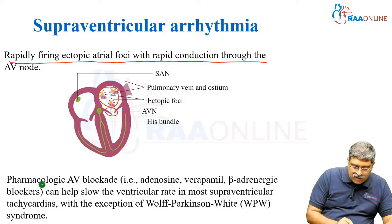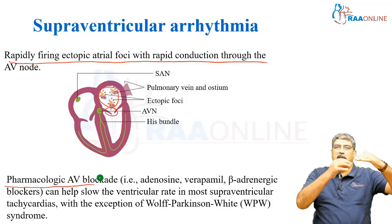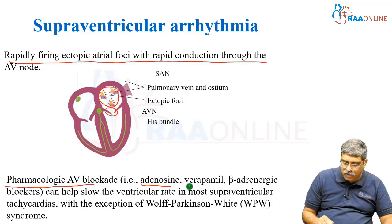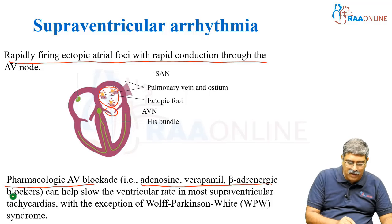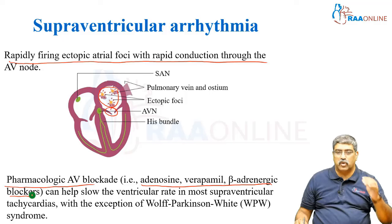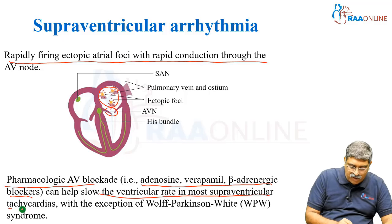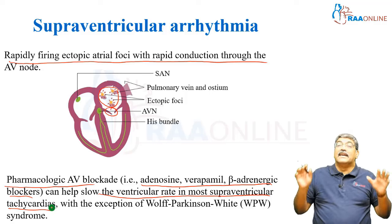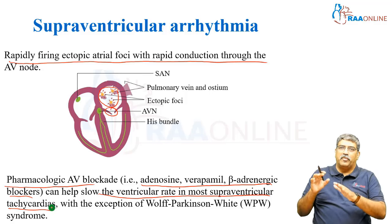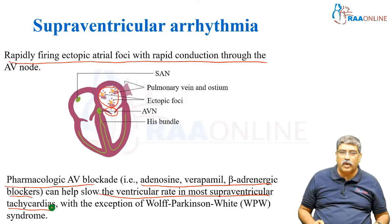Pharmacological AV block — you are blocking the conduction between the atrium and ventricle through adenosine, verapamil, and beta blockers — can help to slow the ventricular rate in most supraventricular arrhythmias, except WPW syndrome, which is Wolff-Parkinson-White syndrome.